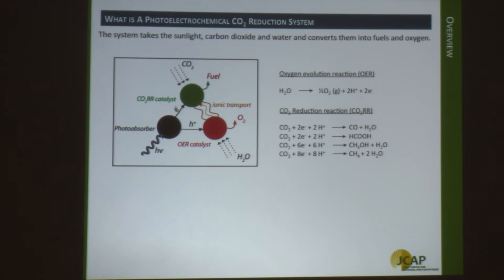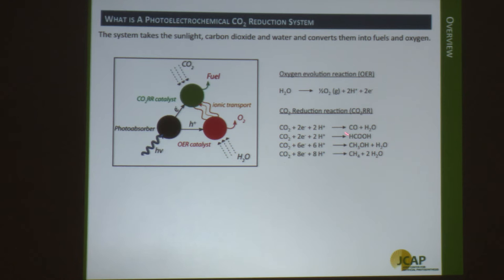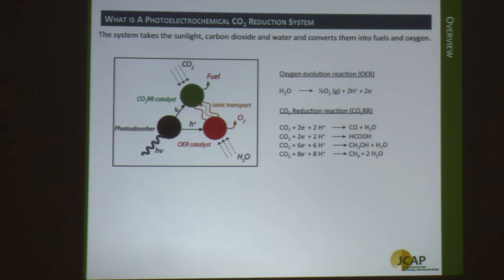For the electrochemical process, you essentially have two half-reactions. One water oxidation reaction takes place at the anode, and at the cathode you have the CO2 reduction reaction. If we're making CO, you're generating a water molecule at the cathode, so overall you're not really consuming any water for CO2 to CO reduction. For anything else — forming methanol and methane — you will need a proton source. In this tutorial, I'll focus on water as the proton source.